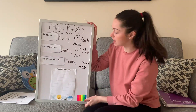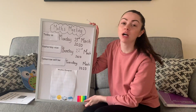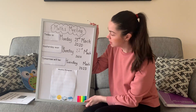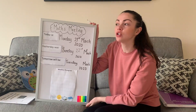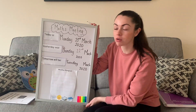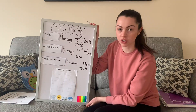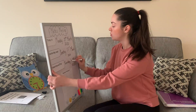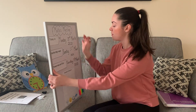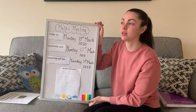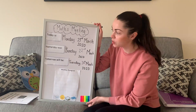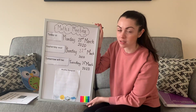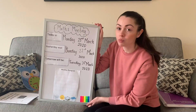Now, tomorrow will be Tuesday the 24th of March 2020. Can anybody think what date tomorrow is going to be? So if today is the 23rd of March, what number comes after 23? Tomorrow is going to be Tuesday the 24th of March 2020. So this is our calendar work for today, and every day you can be saying full sentences about today's date, yesterday's date and tomorrow's date.